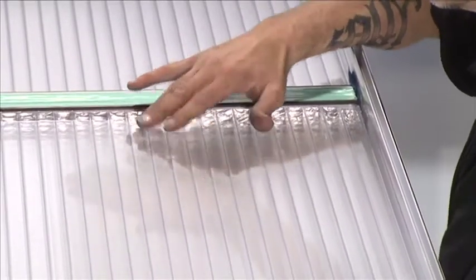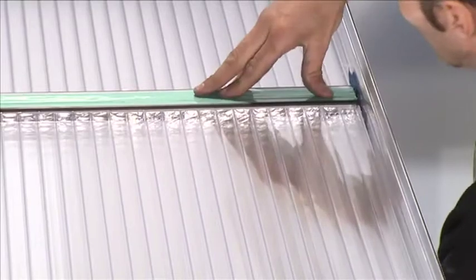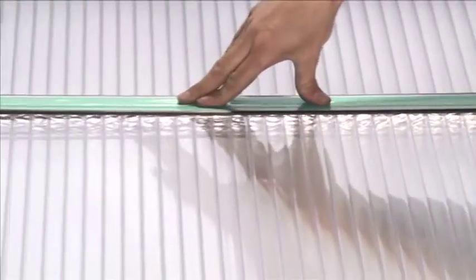Press firmly onto the outer surfaces of the glazing sheet, wiping off any excess silicone with a damp cloth.